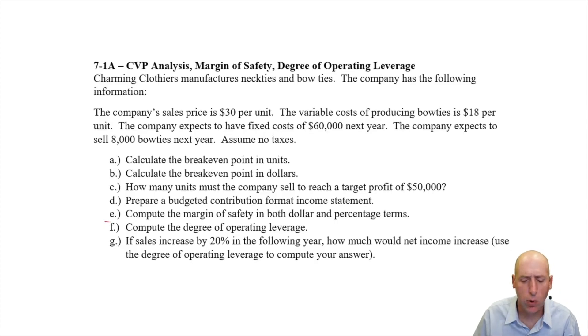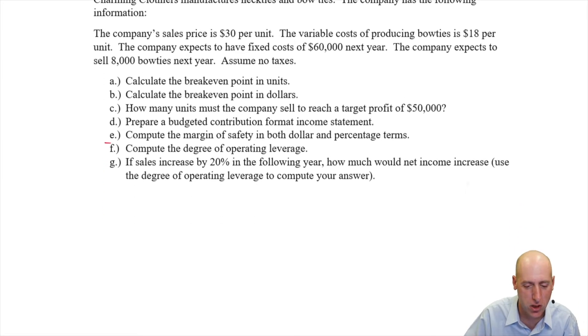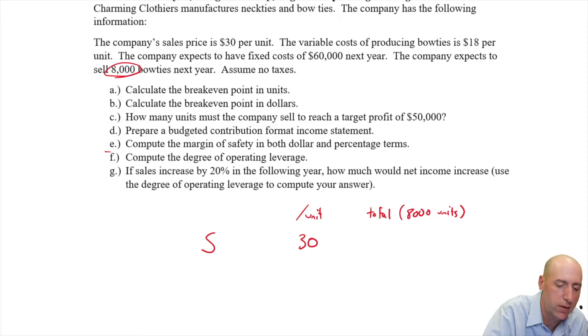Okay, first thing I wanted to do is break-even point in units. But before I do any of that, I like to just lay out the information I have. So I have a sales price and I just put S as my sales price. It's my sales price per unit and my sales price per unit is $30. And maybe I'll do per unit and in total, which in this case is based on 8,000 units. So I'll have two columns here. So if I were to hit my target or my expected sales of 8,000 bow ties, $30 a bow tie times 8,000.